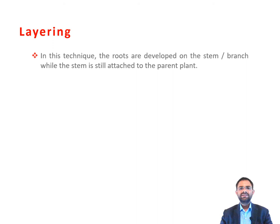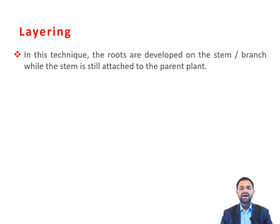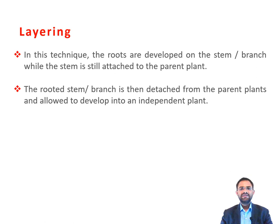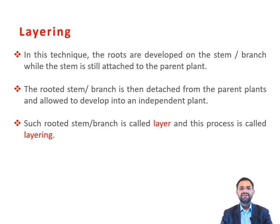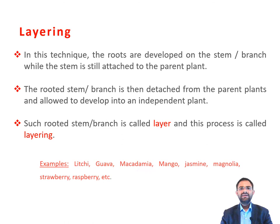A layer is the rooted stem following detachment or removal from the parent plant. In layering techniques, the roots are developed on the stem or branches while the stem is still attached to the parent plant. The rooted stem or branch is then detached from the parent plant and allowed to develop into an independent plant. Such rooted stems or branches are called layers and this process is called layering.